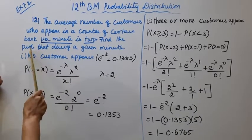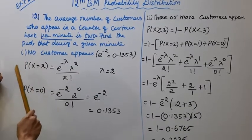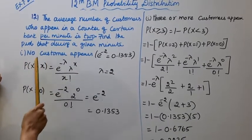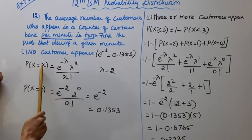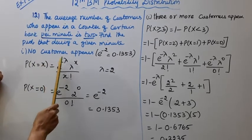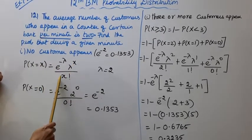For the first subdivision, we use the Poisson probability formula: P(X = x) = e^(−λ) × λ^x / x!